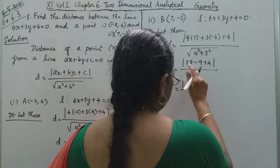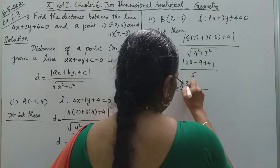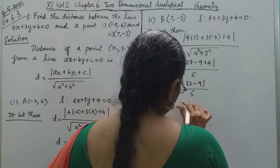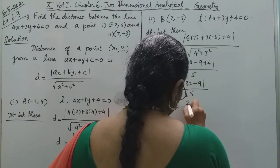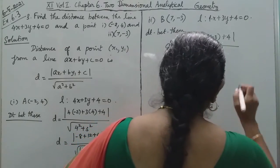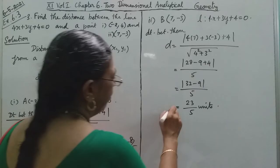28 minus 9 plus 4 equals 23. So the distance is 23 by 5 units.